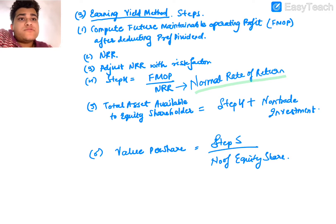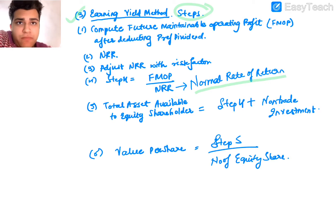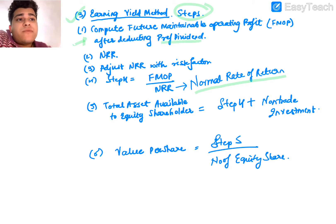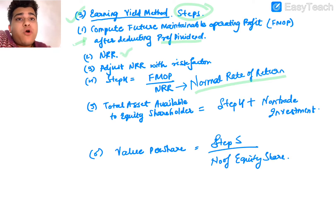The third method is the earning yield method. It helps us understand a company's valuation based on its earnings. Step one: compute the future maintainable profit (FMoP) after deducting preference dividend. FMoP is the future maintainable profit of a particular company — we take the profit from the balance sheet and deduct the preference dividend. Step two: calculate the normal rate of return (NR) the company or the market is giving, and choose the optimized rate of return.